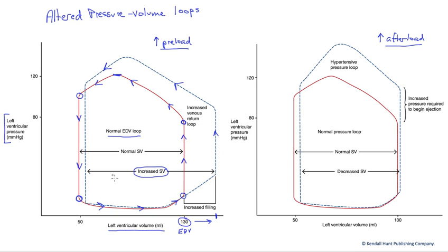If you recall, the area of the pressure-volume loop is an indicator of the amount of work performed by that ventricle. And so our increased preload loop in the dashed line here is utilizing more oxygen and doing more work to eject this larger stroke volume.